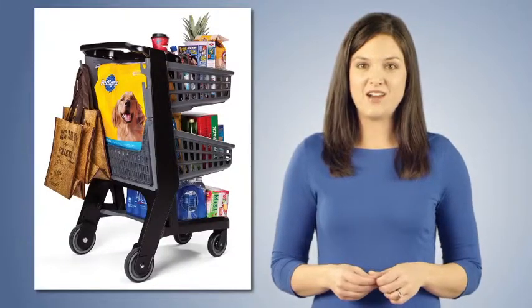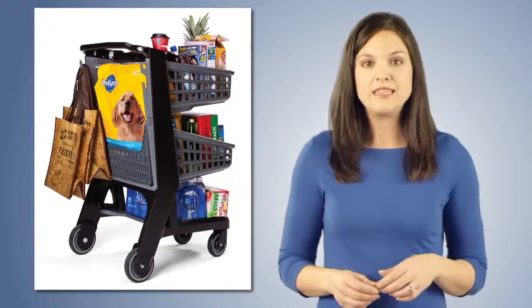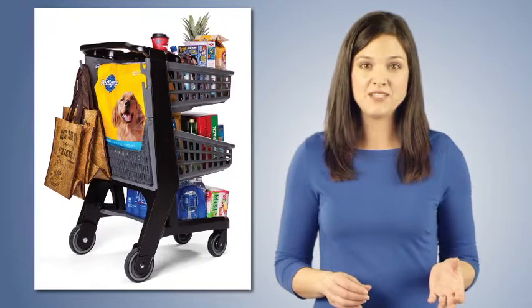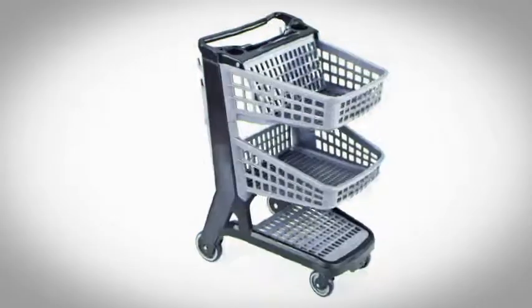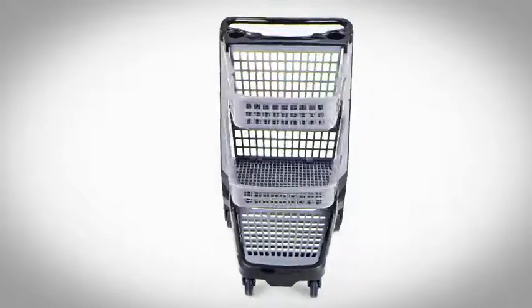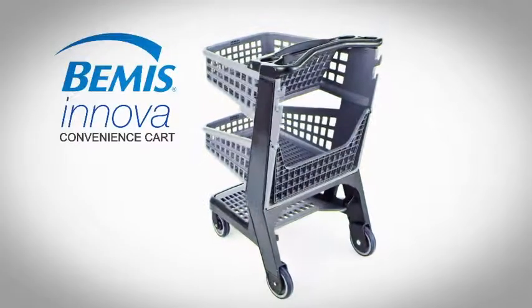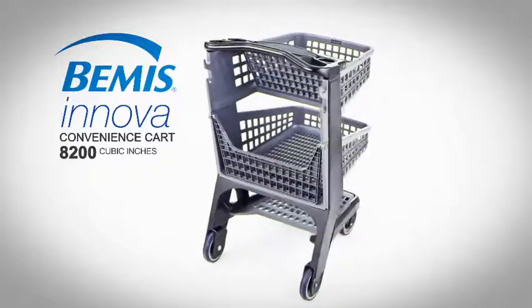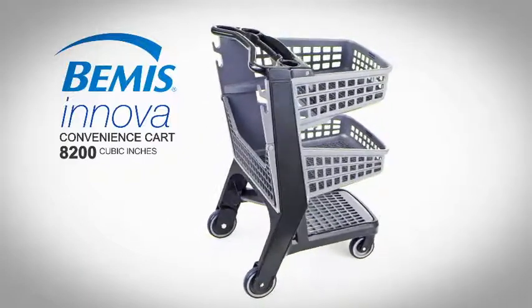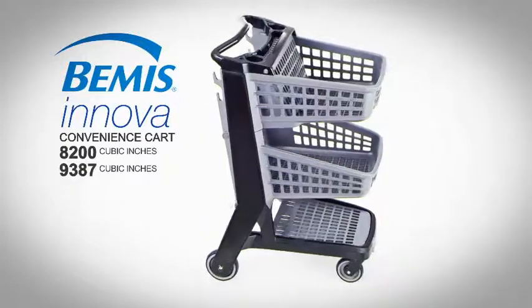Most convenience carts have rear reel bases that are around 23 inches. These carts narrow significantly at the handle, reducing shopping capacity. Our design maintains the width, top and bottom, increasing the amount of goods that can fit in the cart. Because of our unique patent pending design with rear access, shopping capacity is approximately 8200 cubic inches. Throw in a 30 pound bag of dog food and shopping capacity is an unbelievable 9387 cubic inches.